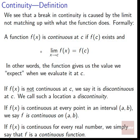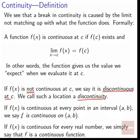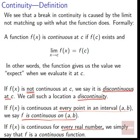Expanding on this idea, we have more vocabulary. If f of x is not continuous at c, we say it is discontinuous at c — the opposite of continuous is discontinuous. If we want to talk about some specific location where it breaks from being continuous, we say it is a discontinuity. If f of x is continuous at every point in an interval, we say f is continuous on that interval. If f of x is continuous for every real number, we simply say that f is a continuous function.